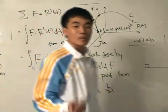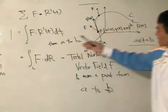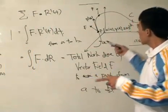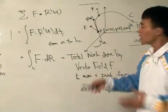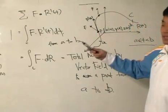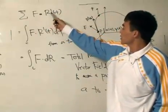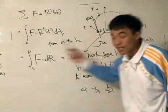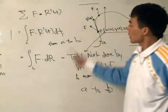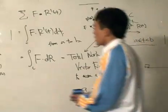That is the physical interpretation of the line integral: it is the total work done by the vector field. The vector field pushes the point along the curve, doing work on it. At any one point, the work done is F dot R' — the first derivative of R giving the direction of movement — and integrating that sum gives the total work done from A to B.